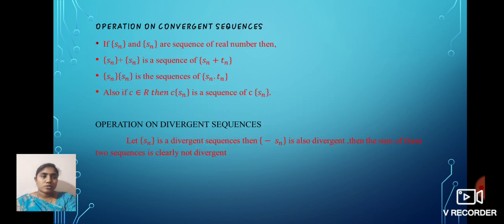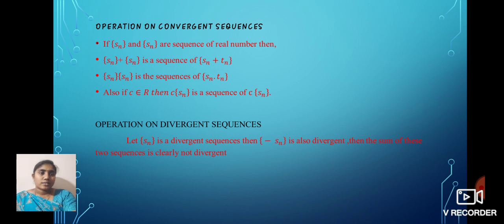Operations on convergent sequences. If {Sn} and {Tn} are sequences of real numbers, then {Sn} + {Tn} is the sequence {Sn + Tn}. Then {Sn} multiplied by {Tn} is the sequence {Sn · Tn}. Also, if C belongs to R, then C · {Sn} is the sequence {C · Sn}.